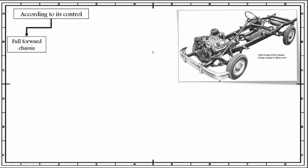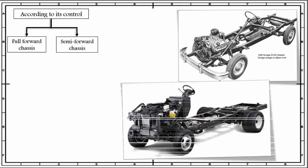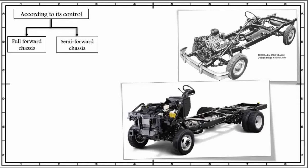According to its control, chassis can also be classified as semi-forward chassis. In this type, the engine is fitted in such a way that half of it is placed in the driver compartment and half in front of the driver compartment. Hence, extra passengers or goods can be placed in that portion of the chassis. These chassis are used in standard and Bedford pickups and Tata Mercedes trucks. An example is shown in this figure — a portion of the engine is fitted in the front whereas the other part is fitted in the driver compartment.